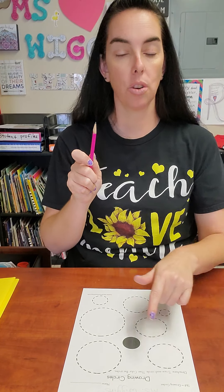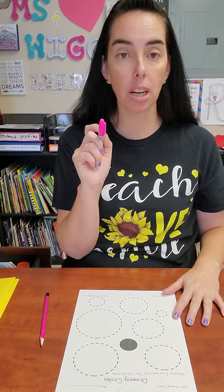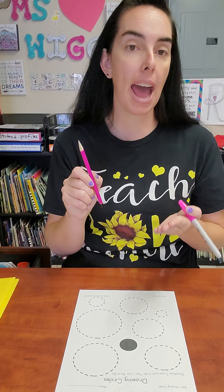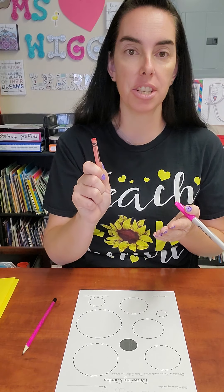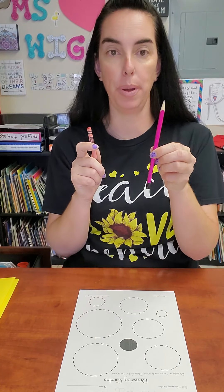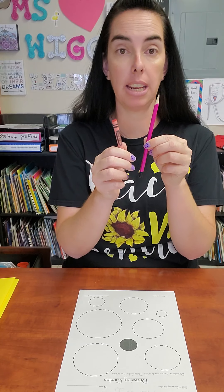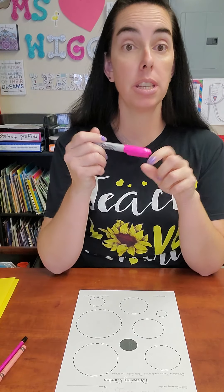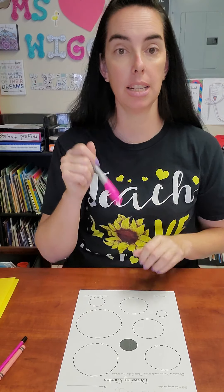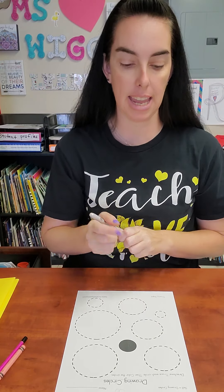You're going to use your pencil and you're going to trace the circles. I'm going to use my marker because I want you to be able to see it on camera, but I want you to trace it with a pencil. If you would like to, you could actually use your crayon for this as well — so you choose. Do you want to use your pencil or do you want to use your crayon? Either way, you can do that.